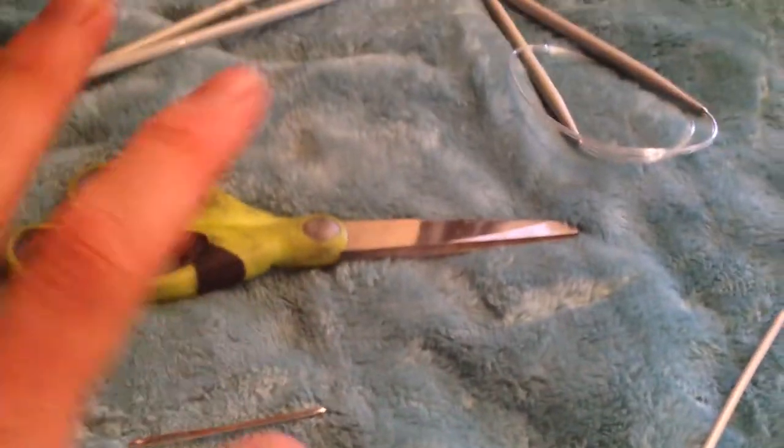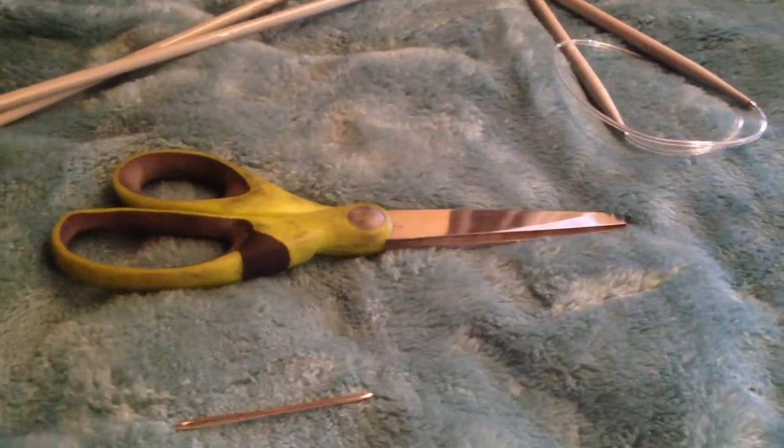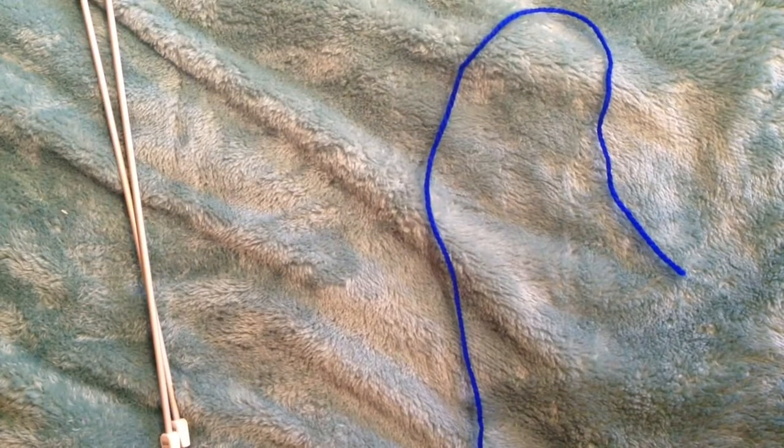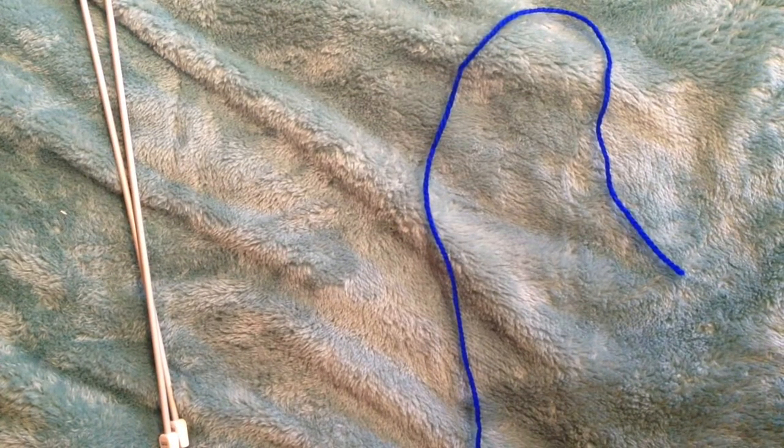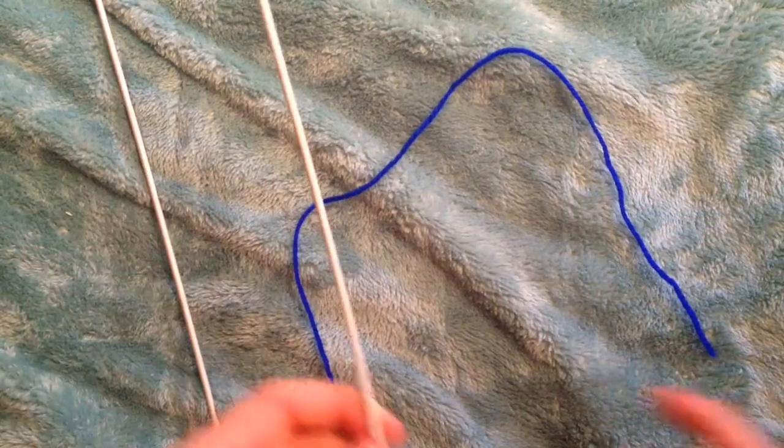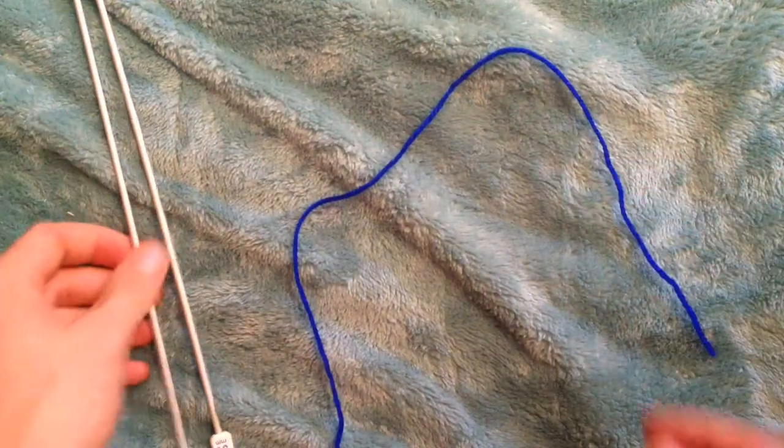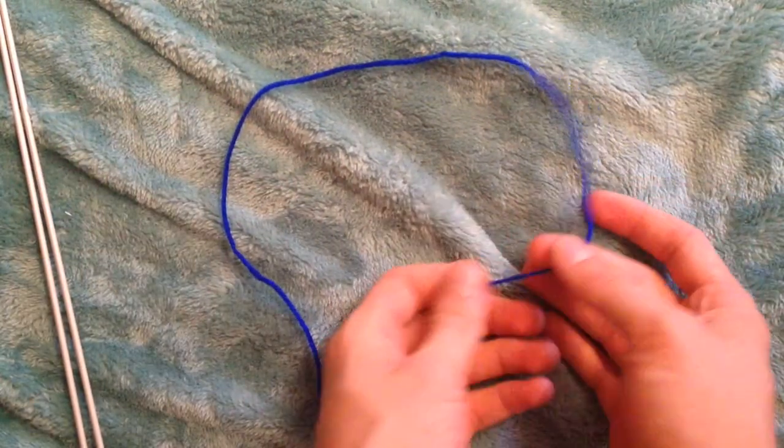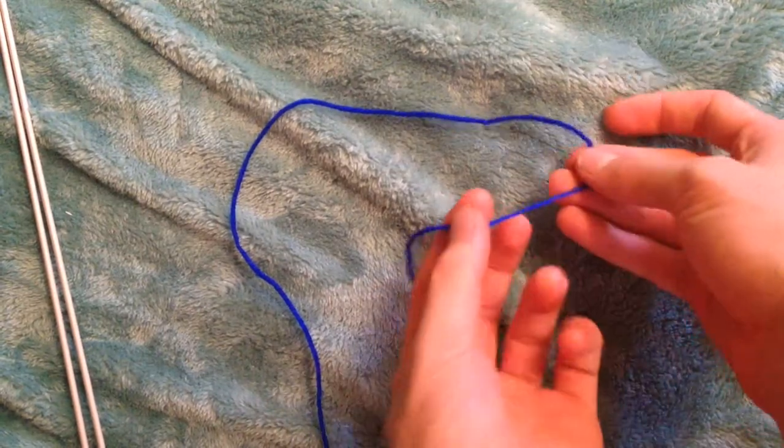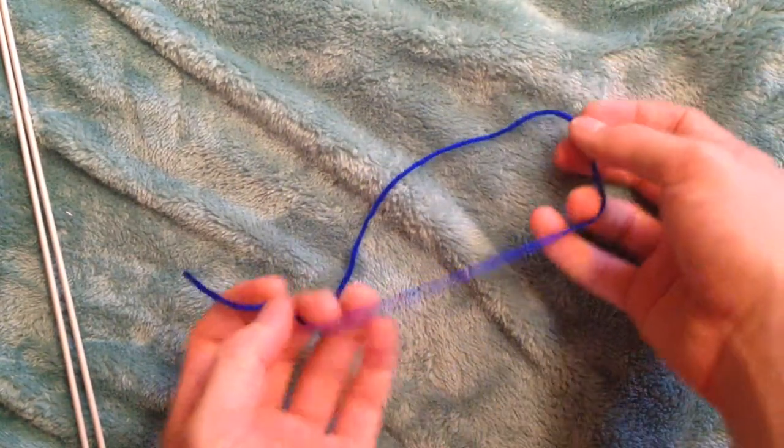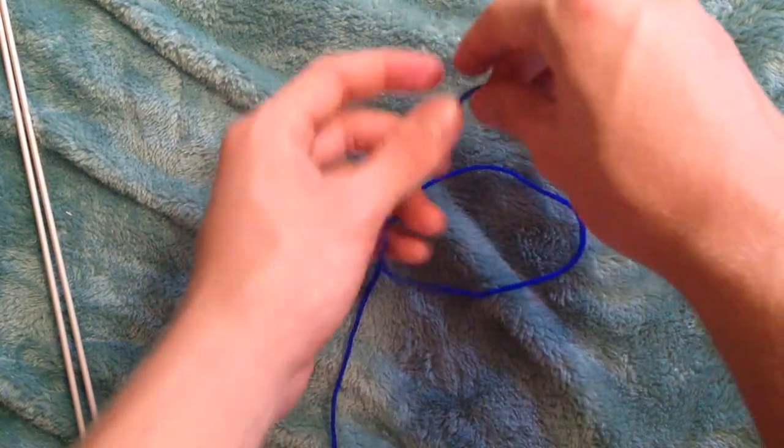Alright so now that we've got our materials done, I'll just show you the first step to knitting. Okay so the first thing we need to do is to make a thing called a slip knot. And that's pretty much going to be your first stitch on your needle. So, to start it off, you'll need to watch closely. So you get some excess wool, just like this. And start to make a bit of a ring, like this.